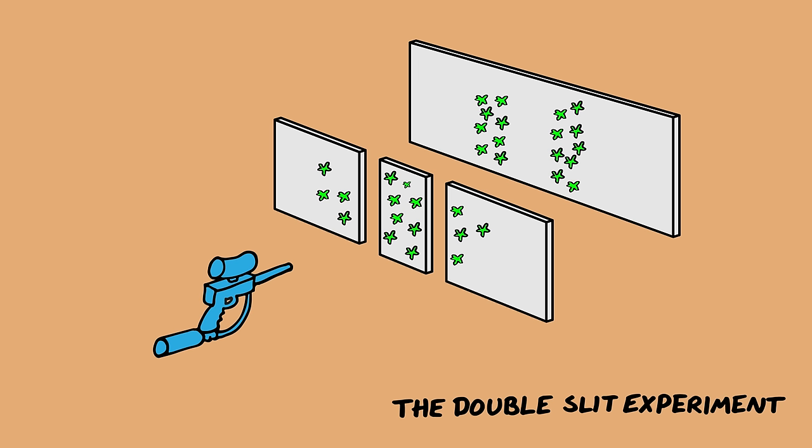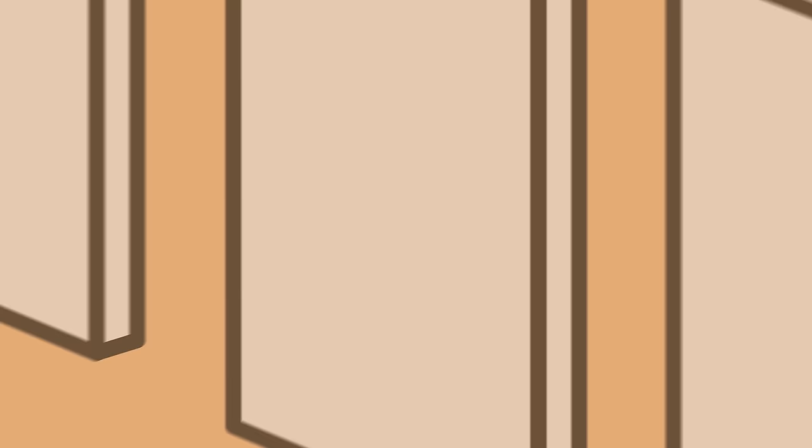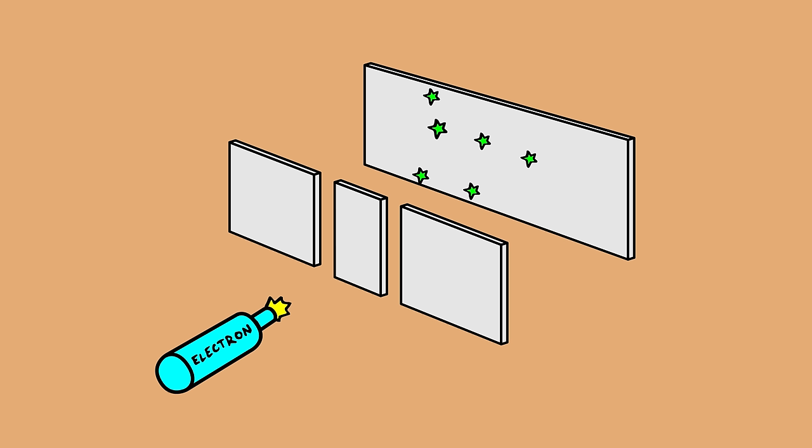Imagine spraying a paintball gun at a wall with two openings in it. You'd expect to see two columns of paint go through and hit the wall behind. But if you shrink this all down to the size of electrons, you see something quite different. You can fire one electron at a time at the slits, and they appear on the back wall, but as they build up over time you get a whole pattern of stripes instead of just two bands.